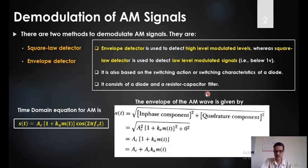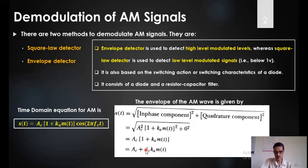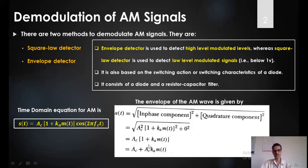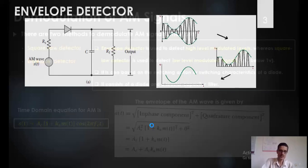So when I detect the envelope of the AM wave, what I get is some DC parameter, which can be removed. The second part is AC into KA, which is a constant — the peak amplitude of the carrier — and m(t) is the required signal. That means when I detect the envelope of the AM wave, I will get back the message signal m(t). Now, how exactly are we doing this? I will explain by using a simple circuit diagram.